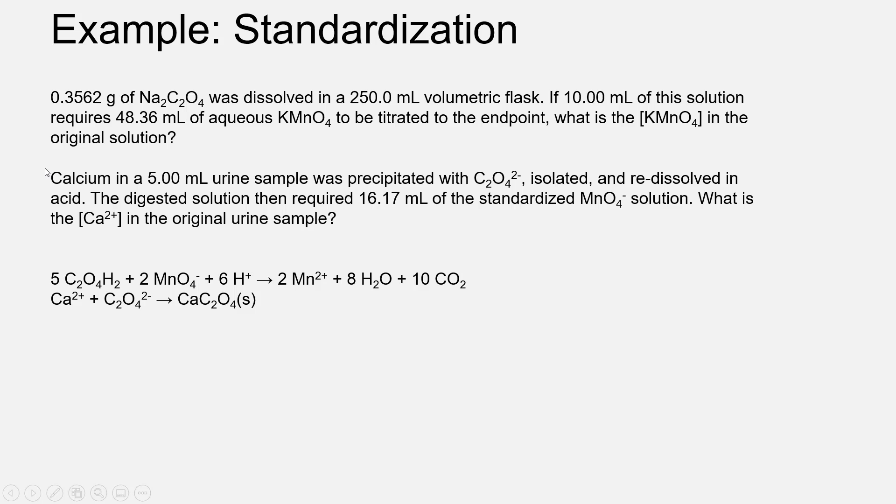For the second part of the problem, we'll get to the actual titration analysis, where we're going to determine the concentration of calcium in a urine sample. Calcium ion in a 5 mL urine sample was precipitated with oxalate, isolated, and re-dissolved in acid. This digested solution required 16.17 mL of the standardized permanganate solution from the first part to reach the endpoint. What is the calcium concentration in the original urine sample?